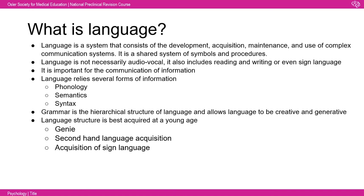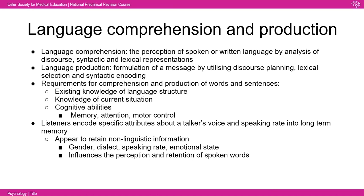Language comprehension is the perception of spoken or written language by analysis of discourse, syntactic, and lexical representations, whereas language production is the formulation of a message by utilizing discourse planning, lexical selection, and syntactic encoding. They are inherently linked — the core requirements for comprehension and production are the same: existing knowledge of language structure, knowledge of the current situation, and cognitive abilities including memory, attention, and motor control for signing or speaking.